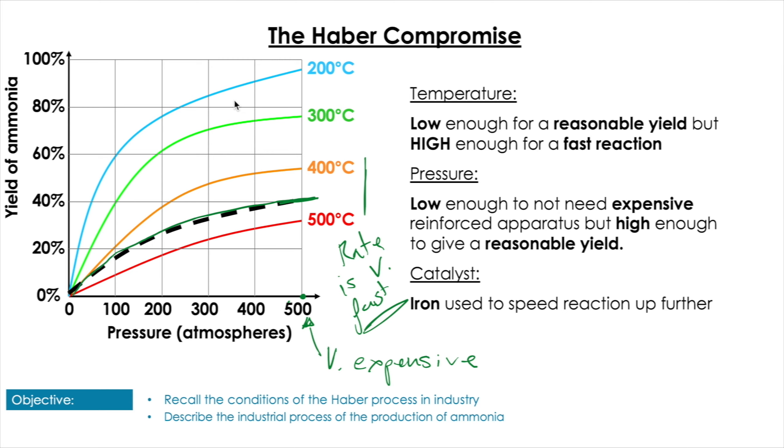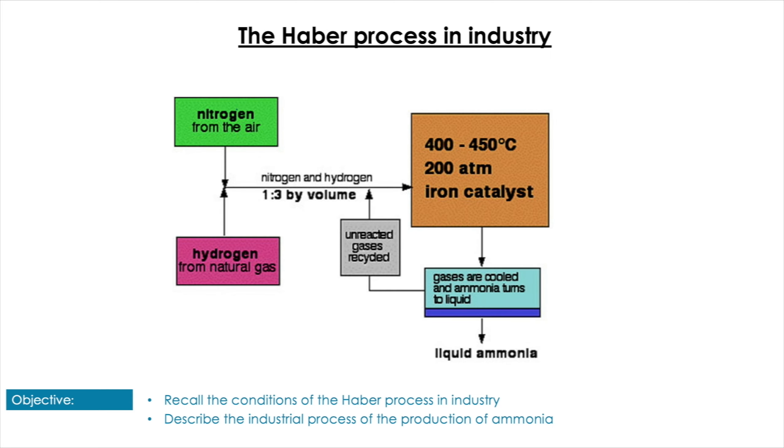If we have a look at a flow diagram of this process in industry, you can see that we get the nitrogen coming in from the air, and natural gas provides us the source of hydrogen. These get pumped in at a 1 to 3 ratio, and then they go into the middle reaction chamber—400 to 450 degrees, 200 atmospheres, and an iron catalyst. The structure of this reaction chamber is kind of set up as like a stepped cascade.